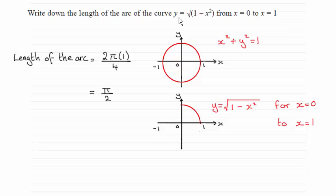So what we've got here is positive values of y for x going from 0 to 1. So clearly that is this arc in the first quadrant.